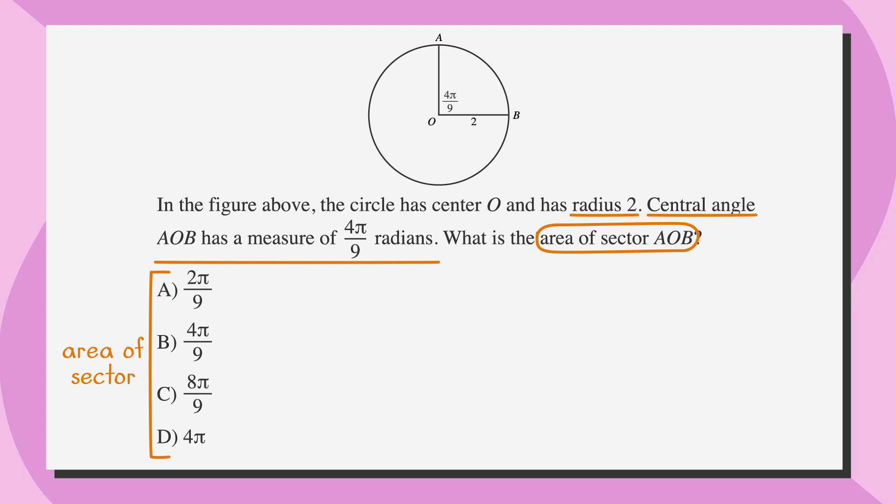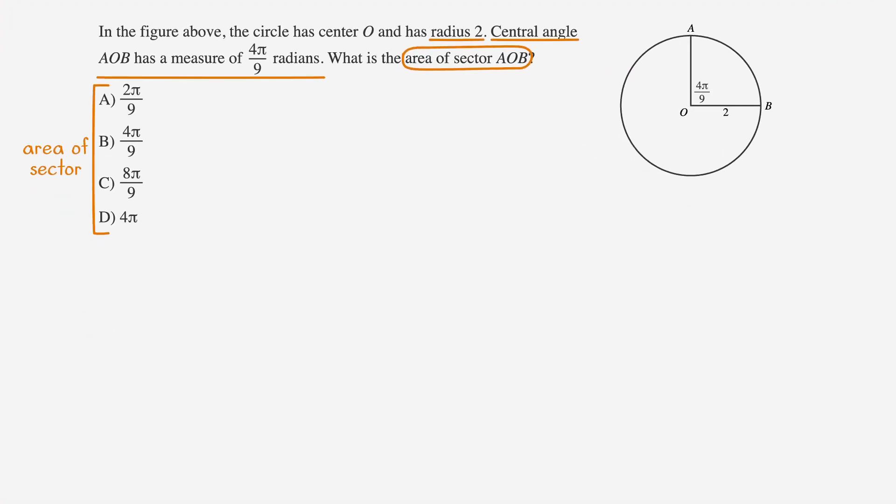Now our central angle is measured in radians. We know this because the question uses the word radians and because the angle is written with the letter pi, not with the degree symbol. As we've discussed, it's often easier to convert the radians into degrees. We know that pi radians equals 180 degrees, so we can replace the pi in the angle with 180 degrees.